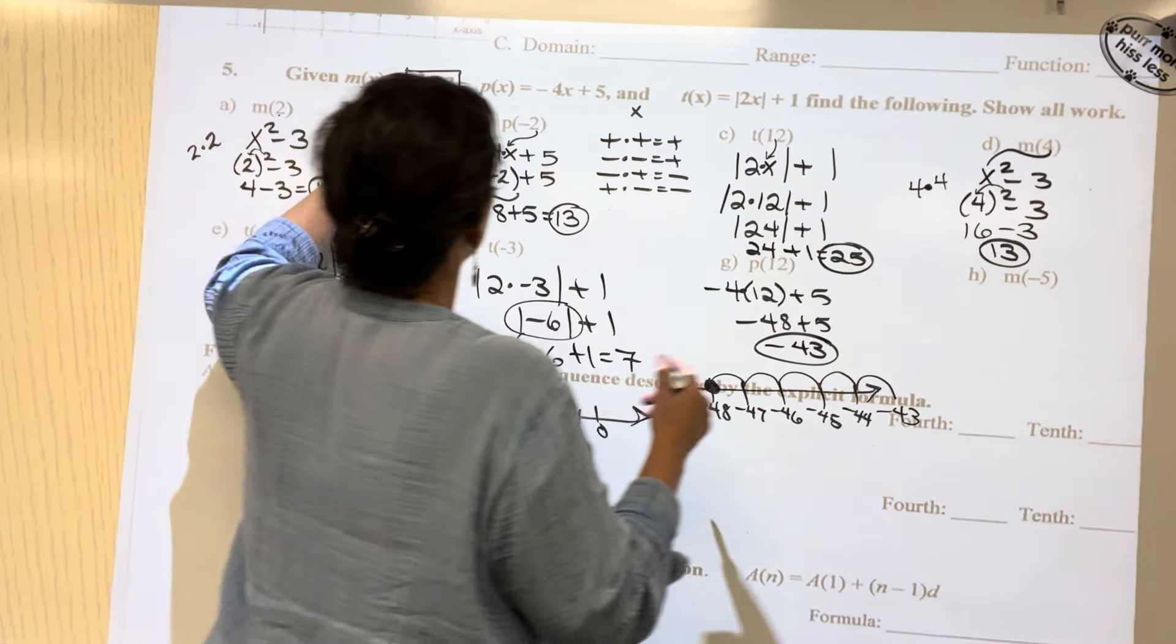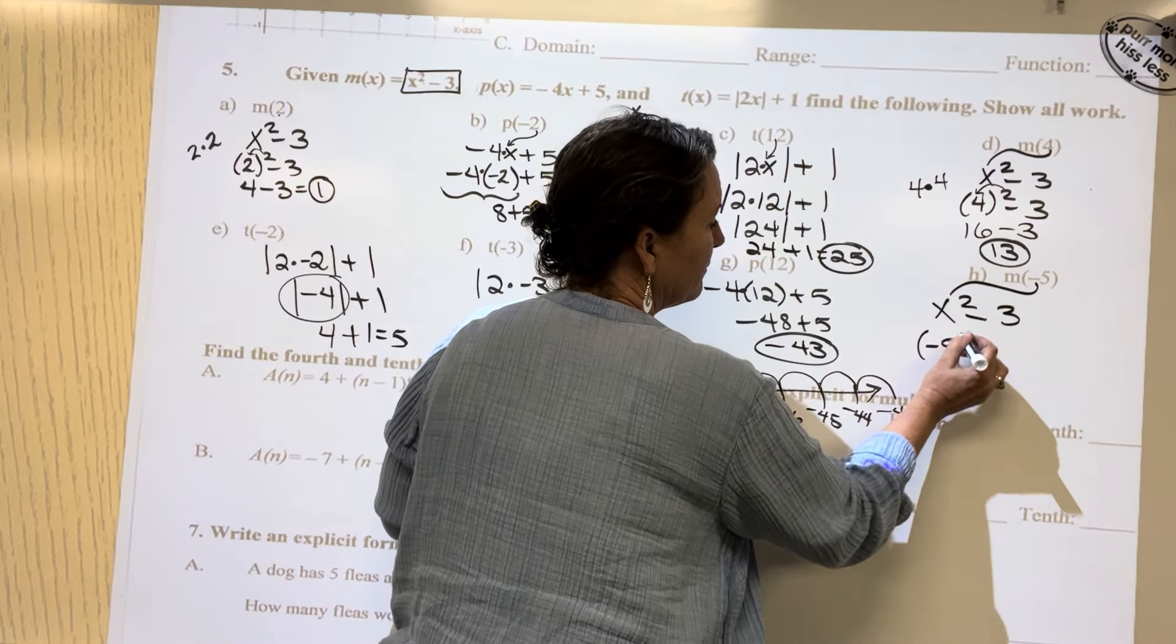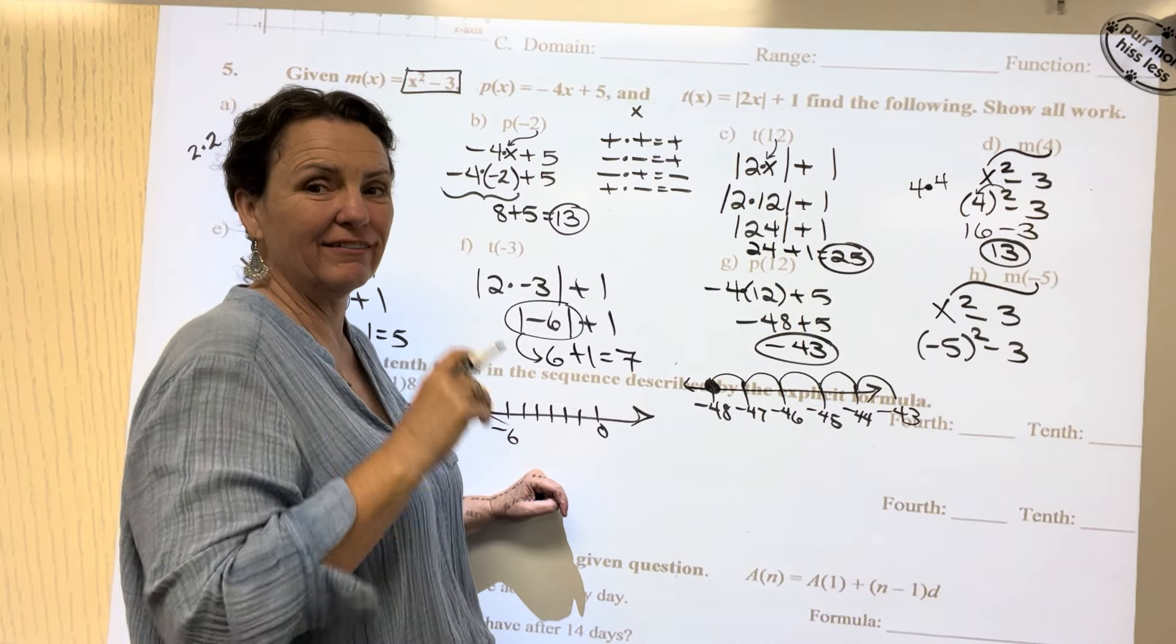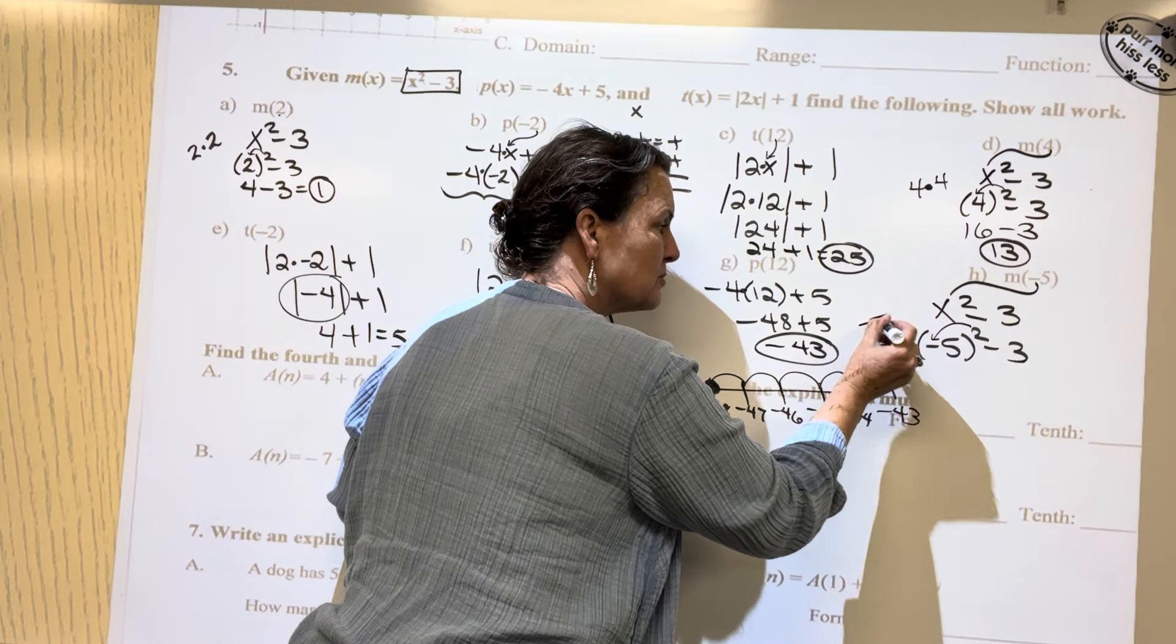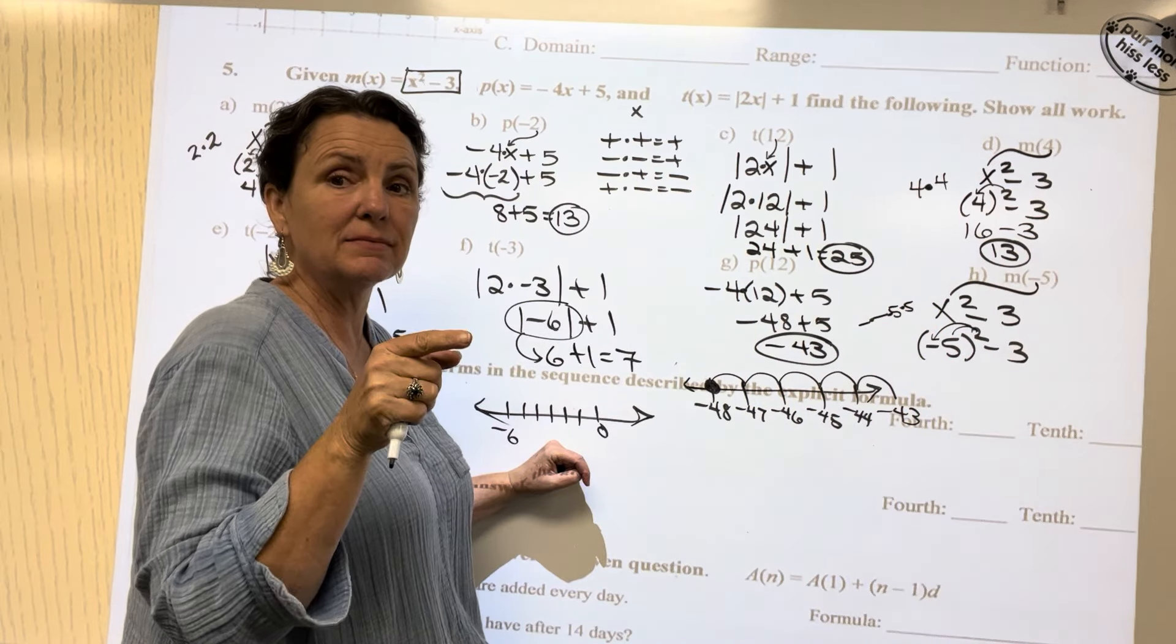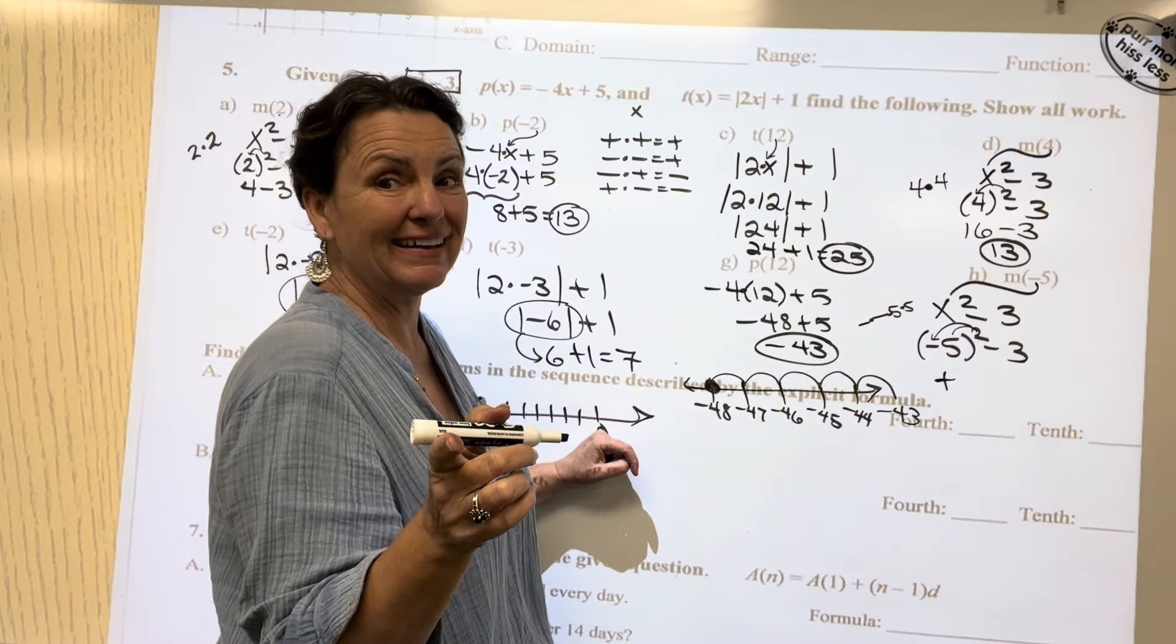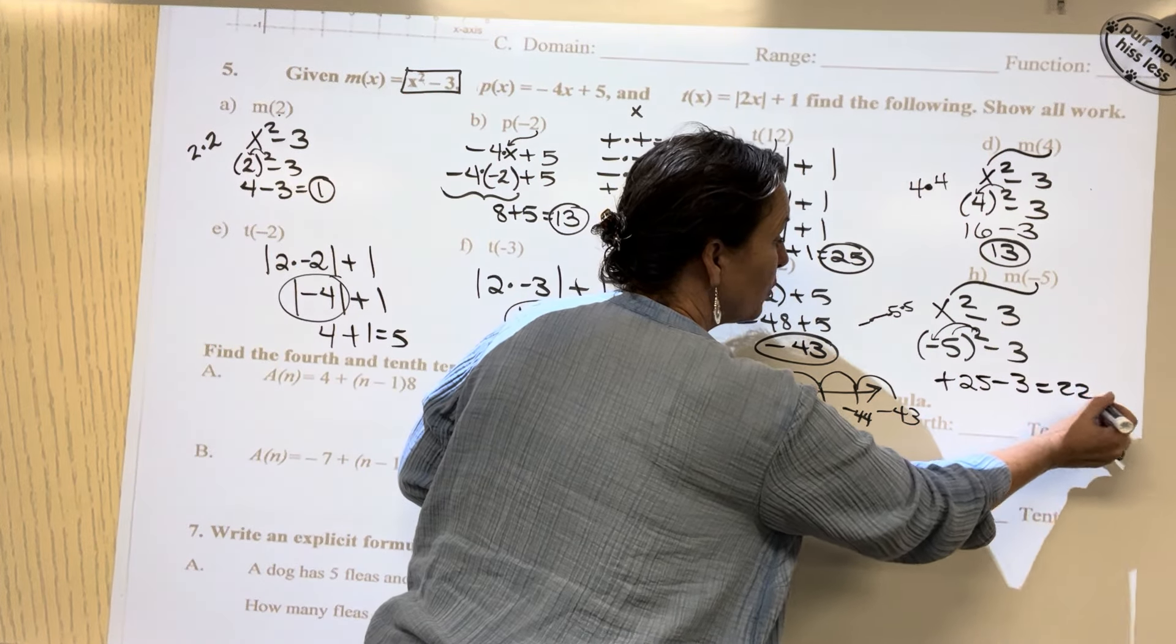And last but not least, we have M. That's this guy right here. X squared minus three. And we're going to drop in a negative five. When in doubt, write that out, help your brain figure it out. So we have two of these and it's multiply two of these. And remember it's multiply. So it's a negative times a negative, which is a positive, right? And five times five is don't tell me 10, 25. Nice. And now a 25 takeaway three is 22.